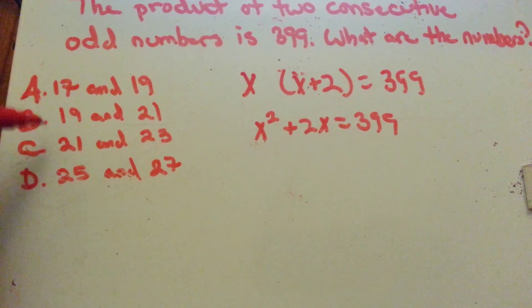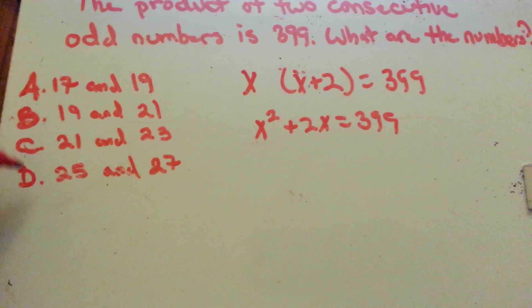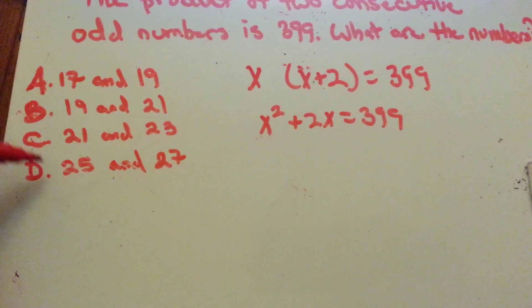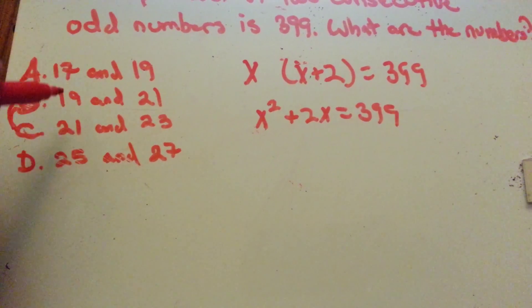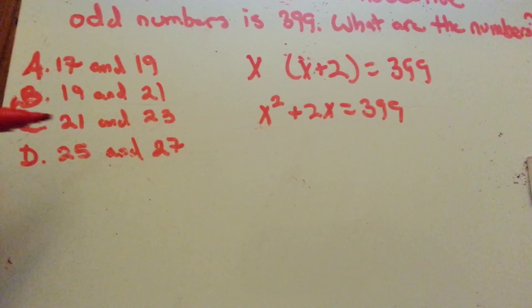What I would do is pretty much guess and test. Look at the highest and lowest numbers in the options, figuring it's probably going to be something in the middle, and then just guess and test.